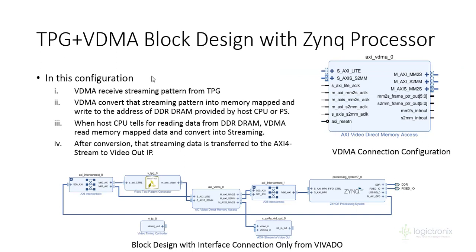Here we have the TPG — Test Pattern Generator — which was discussed in a previous lecture. In the TPG plus VDMA block design, we have TPG and AXI-VDMA. The TPG provides a streaming output that is fed to AXI-VDMA. The AXI-VDMA stores that TPG output into DRAM via memory map, which can be accessed from the processing system. The output is then passed through to the AXI stream-to-video-out IP, which displays the output on a physical VGA interface port.